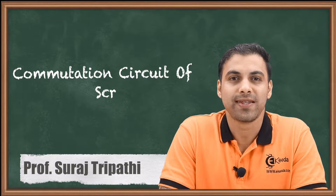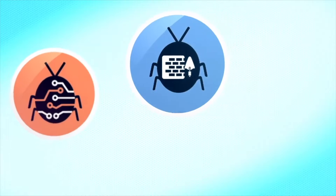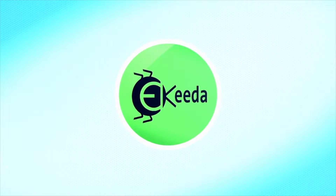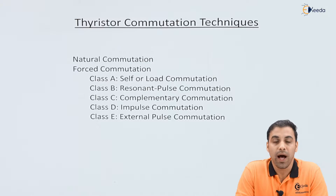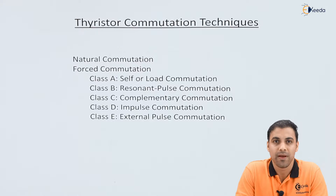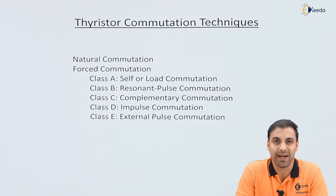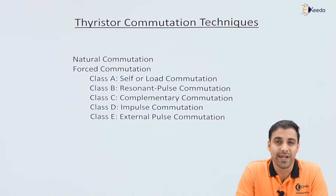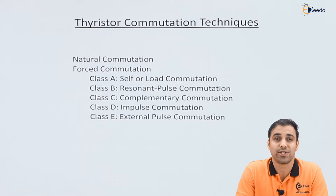Hello friends, today we are going to discuss about thyristor commutation circuit. We have discussed how we can switch on or trigger the thyristor. But as you know, thyristor is a semi-controlled device — once you trigger it and it starts conducting, you cannot stop it automatically. So we need an external circuit to stop the thyristor. This external circuit through which thyristor conduction is stopped is called a commutation circuit, and the entire principle is called the commutation of thyristor.